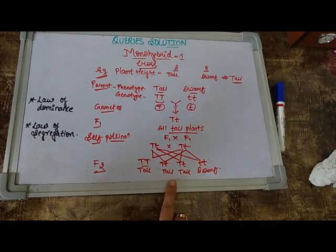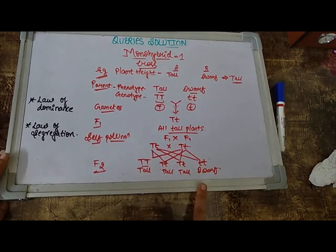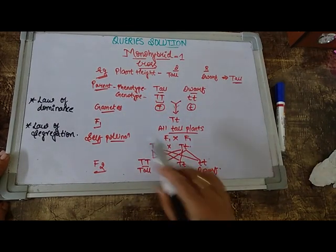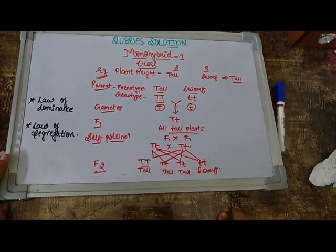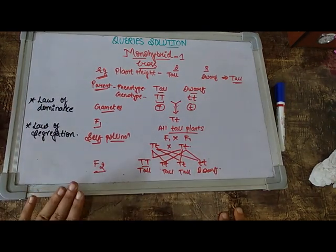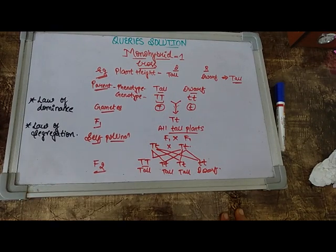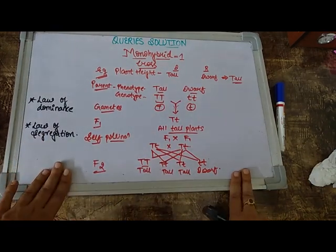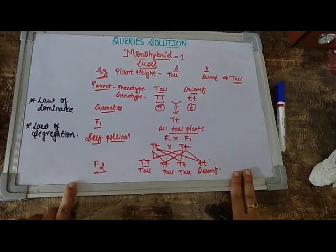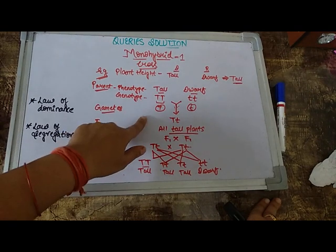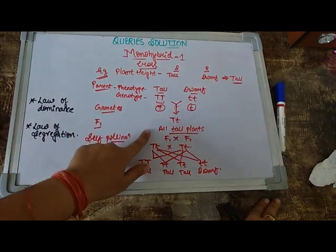So when Mendel was performing his monohybrid cross taking one character into consideration as you can see over here in the cross itself, he actually has deduced certain inferences based on these crosses that he has performed. Because for all the seven characters you are getting the same type of result. So as you can see in this example which is being quoted, which is on plant height, when a cross was made between a tall and a dwarf plant in the F1 generation.